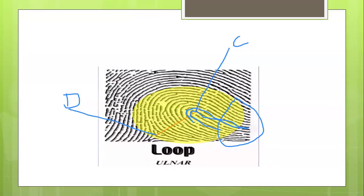Draw an imaginary line between the core and delta. Are there ridges touching the imaginary line drawn between the core and the delta? Yes. These are the ridges — all of them touch the imaginary line. That is where we get the ridge count. So in this illustration, it is very clear that it is a loop pattern coming from the right hand, and it is an ulnar loop since the open end is towards the little finger.